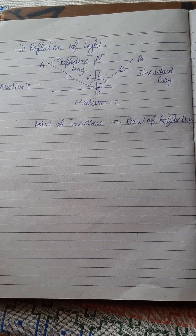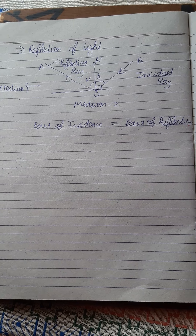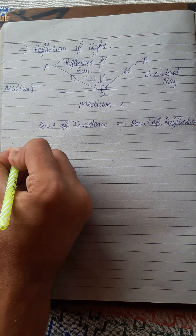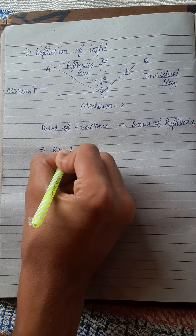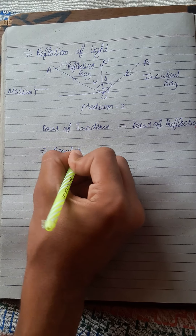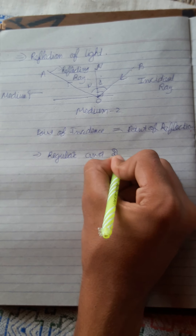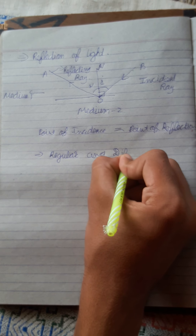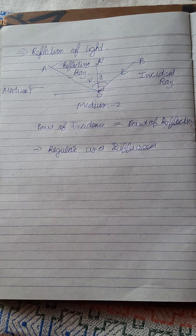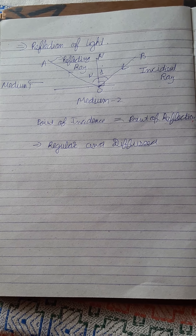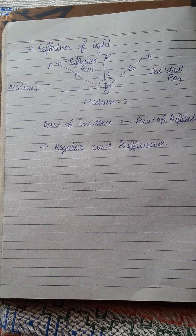Now let's learn about the two different types of reflection. There are two major types: regular reflection and diffused reflection. Regular means all the reflected rays are following the same path, while diffused means they are not following a fixed path.